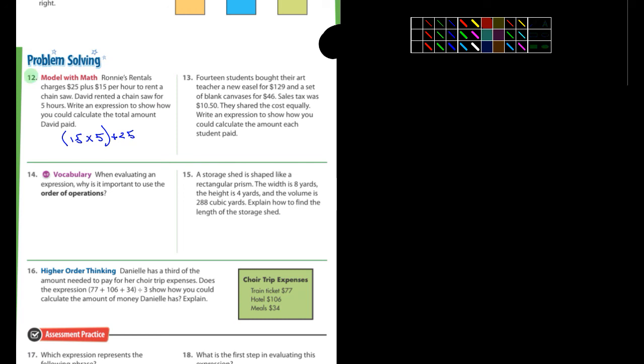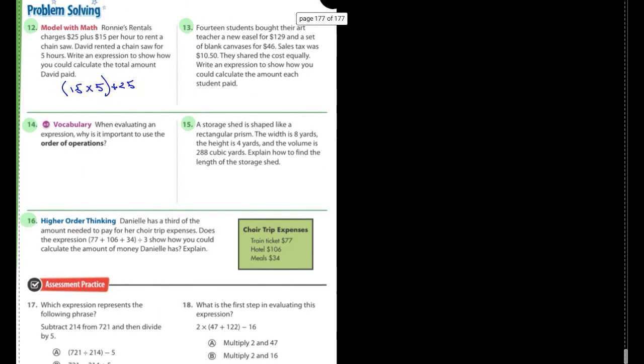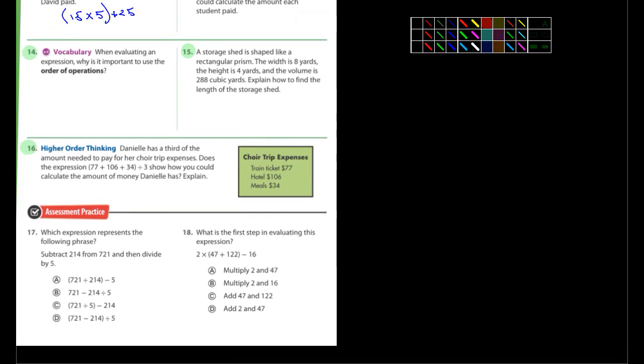So you could do 12, 13, 14, 15, 16. Go down a little further here. Yeah, 17 and 18. 17 and 18. I'm looking to see if any of these are problematic for you guys. Let's see. Number 14. When evaluated an expression, why is it important to use order of operations? So everyone will get...